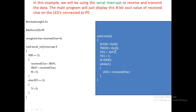TMOD is 0x20. Why 0x20? Because I am using Timer 1 Mode 2, which is auto-reload mode, to generate the baud rate. I load 0xFD into TH1 because I am going to set the baud rate to 9600. That is why I have loaded 0xFD in TH1. If you want to know how we calculate this value to load into TH1 to generate 9600 baud rate, go through my serial communication lecture.